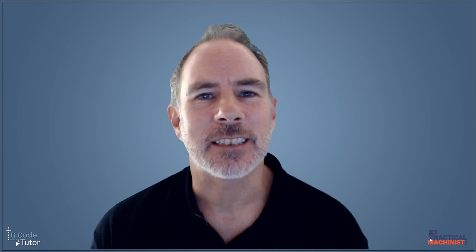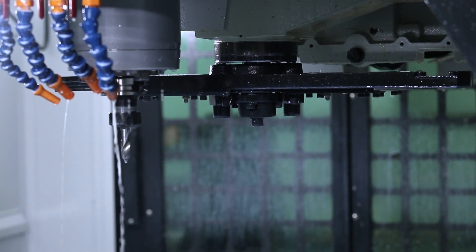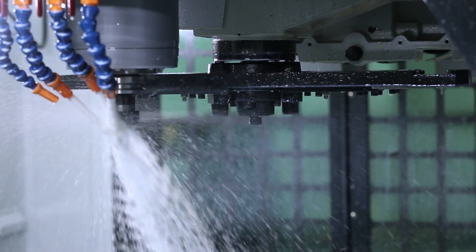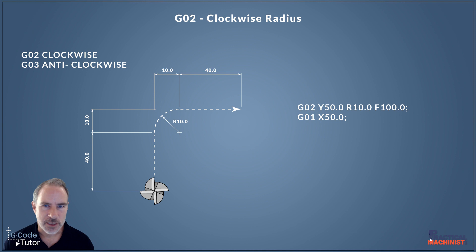Hello, my name's Mark from G-code Tutor and I'm here today with Practical Machinist to talk about some issues we might face when programming G-code and how we can solve them. Another problem we might come across is when to use an R or I, J and K when programming radiuses.